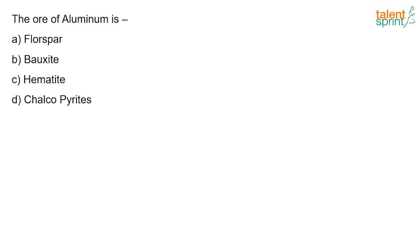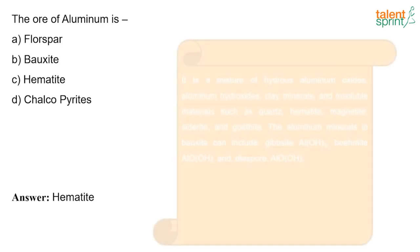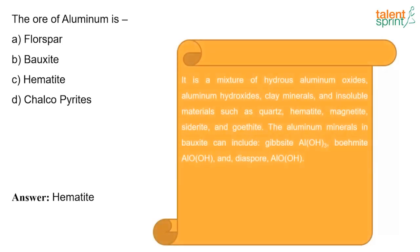The ore of aluminium — the options are bauxite, hematite, chalcopyrite. The answer given is bauxite, which is a mixture of hydrous aluminium oxide, aluminium hydroxide, clay minerals, and insoluble materials such as quartz, hematite, magnetite, siderite, and goethite.